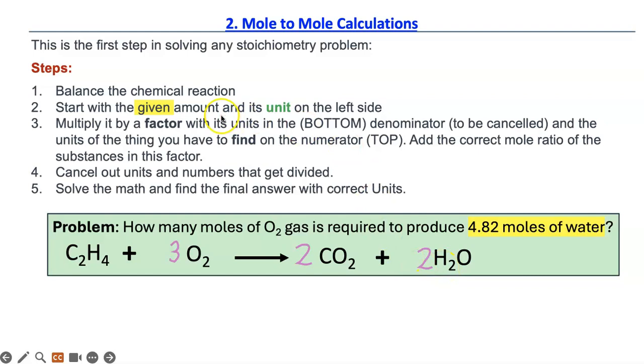Now, you start with the given amount and the unit. That would be the yellow highlighted section. So, you write that down. And the given unit is moles of H₂O.